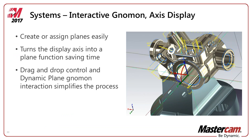The interactive gnomon in the bottom left is basically a dynamic plane function — you just click and drag it and drop it wherever you want to create a plane.